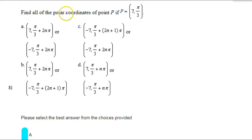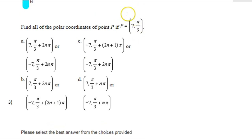Find all of the polar coordinates of point P if point P is 7, pi over 3. Now remember, these are polar coordinates, so this 7 is the R value. That's the distance from the center. And this pi over 3 is theta. It's an angle of rotation.